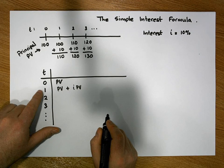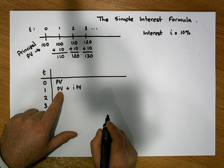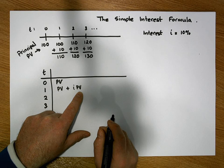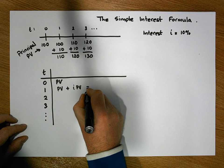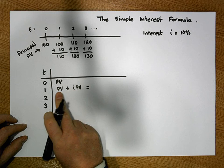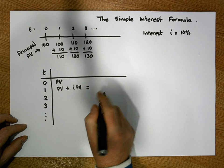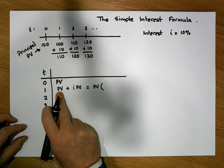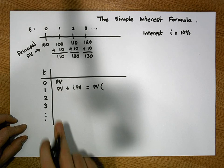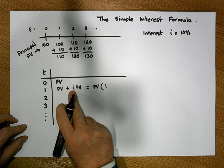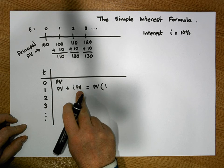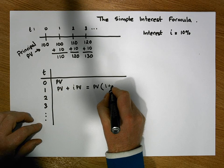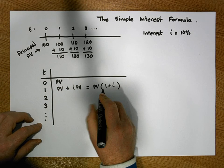After one year, the account holds our principal value PV plus I percent of PV. With a little algebra, these two terms share a common factor of PV. Taking PV out, we're left with PV times (1 + I).